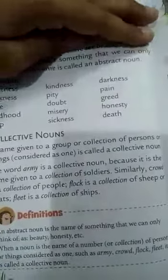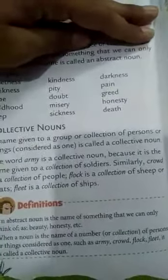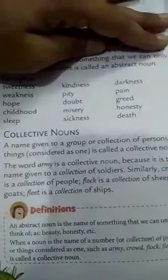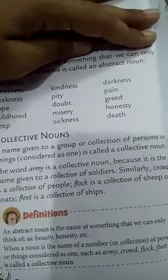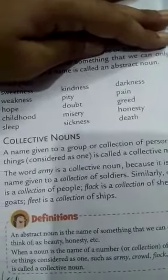Flock is a collection of sheep or goats. Fleet is a collection of ships.